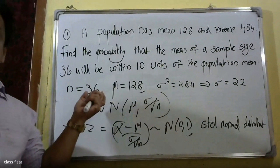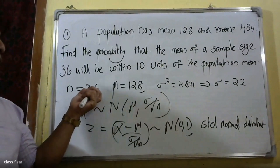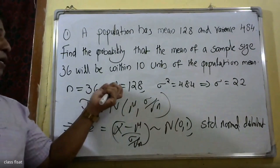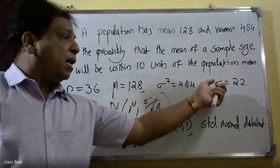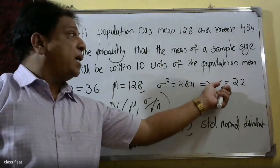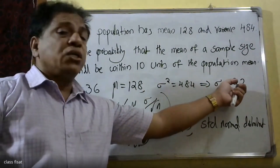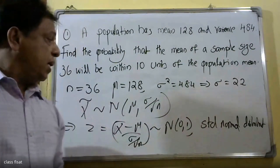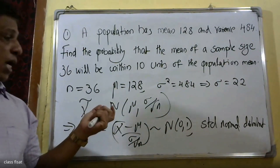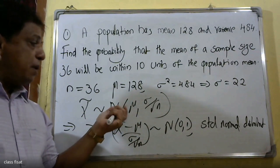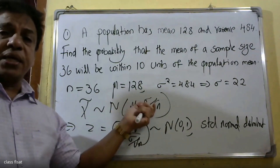n is equal to 36, population mean is 128, and sigma is equal to 22. Then x̄ follows N(mu, sigma by root n).